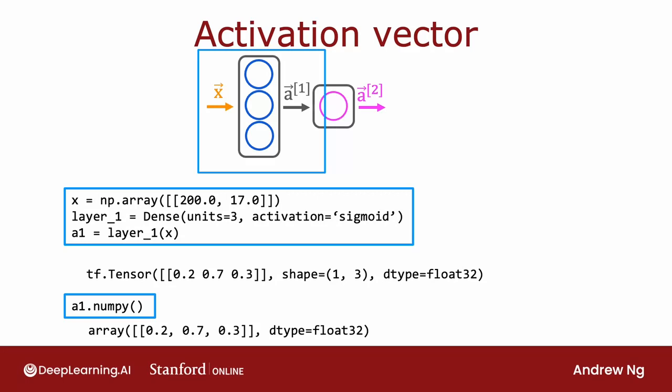Going back to the code for carrying out forward propagation or inference in the neural network. When you compute A1 equals layer 1 applied to x. What is A1? Well, A1 is actually going to be, because there's three numbers, is actually going to be a 1 by 3 matrix. And if you print out A1, you will get something like this. It's tf.tensor 0.2, 0.7, 0.3 is a shape of 1 by 3. 1, 3 refers to that. This is a 1 by 3 matrix. And this is TensorFlow's way of saying that this is a floating point number, meaning that it's a number that can have a decimal point represented using 32 bits of memory in your computer. That's what a float 32 is.